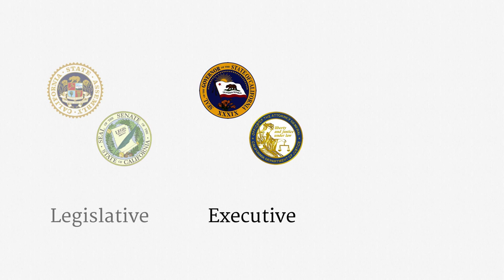The branches of state government closely match the branches of the federal government. Each state has a legislative branch, and all states have two houses in their legislature, except Nebraska. The executive branch is also similar, with a governor instead of a president. One key distinction worth highlighting is that the chief state and county law enforcement officers are usually independently elected — those positions are, respectively, the state attorney general and the district attorneys. In the federal system, by contrast, the attorney general is a subordinate of the president, and the United States attorney in each judicial district is a subordinate of the attorney general. The practical difference of electing prosecutors can be substantial.